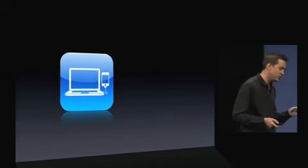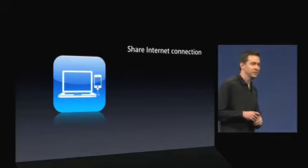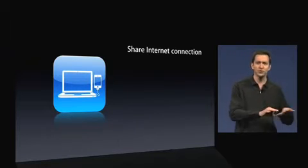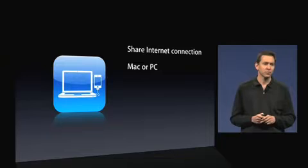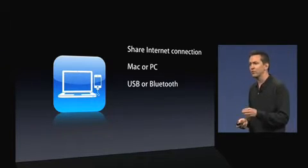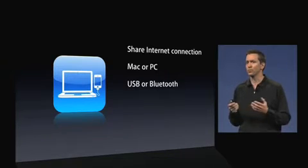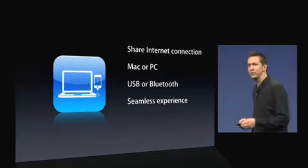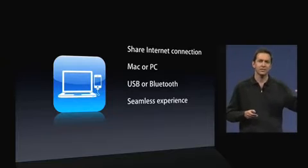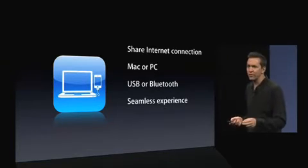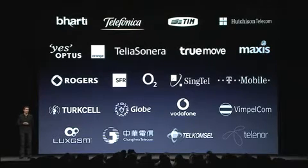Next: Tethering. Tethering allows you to share your iPhone's internet connection with your computer. If you're somewhere with your laptop and there's no Wi-Fi around, you can share the internet connection your phone already has right with your computer. This works with both Macs and PCs. It works wired over USB with the same cable that came with your phone, and it also works wirelessly over Bluetooth with your phone just in your pocket. It is a seamless experience — once you've turned on tethering on your phone, there's no need to run any application or tethering software on your computer. Like MMS, this requires carrier support, and we have 22 carrier partners in 42 countries around the world that will support this at the launch of iPhone OS 3.0, and more will be rolling out later.